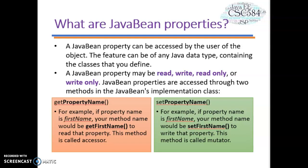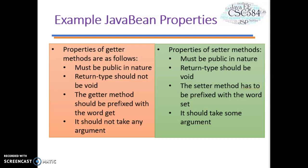The first method is get-property-name — for example, if the property name is firstName, your method name would be getFirstName to read the property. This method is called the accessor. The second method is set-property-name — for example, if the property name is firstName, your method name would be setFirstName to write that property. This method is called the mutator.